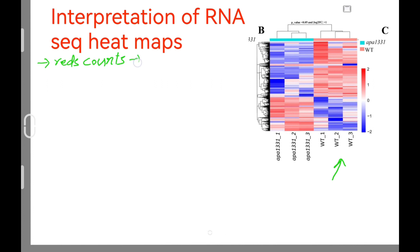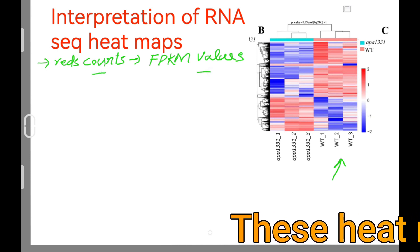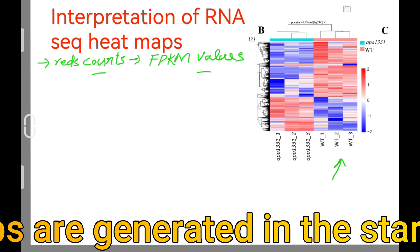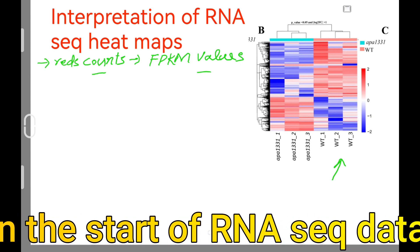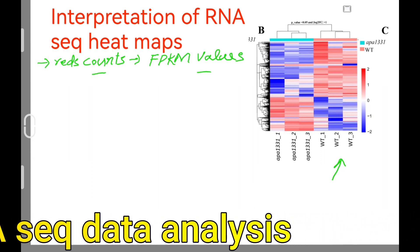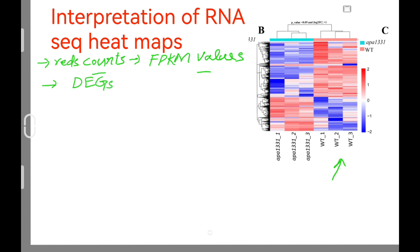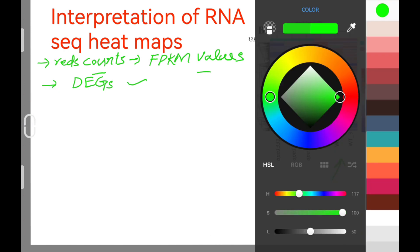Number two, we can also use FPKM values. These two types are used when the data is initially analyzed, and the heat maps generated by these two types are usually larger in size. The third type, which is most useful, is generated with DEGs data. DEGs are also obtained from FPKM values or read counts data.